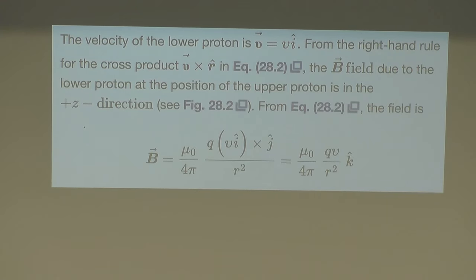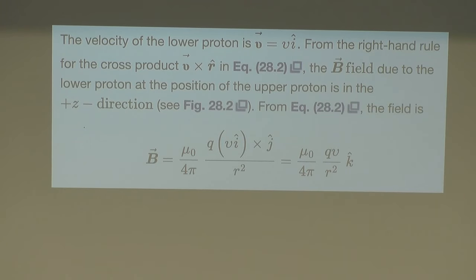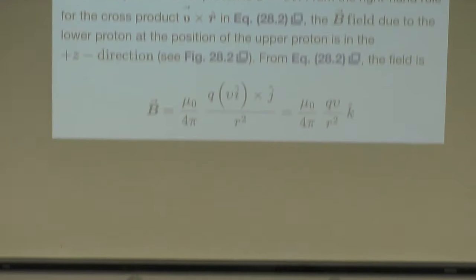To write this out: our vector B equals mu-naught over 4 pi, times QV cross R-hat over R-cubed. Since V is in the I-hat direction, V becomes QV times I-hat. Since the R vector points from the lower proton to the upper proton — in the J-hat direction — we cross I-hat with J-hat.